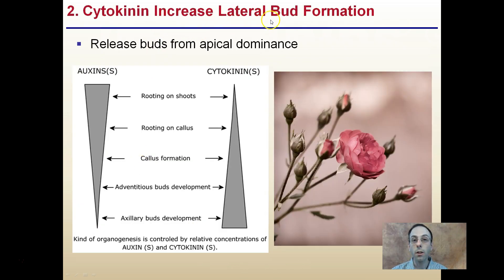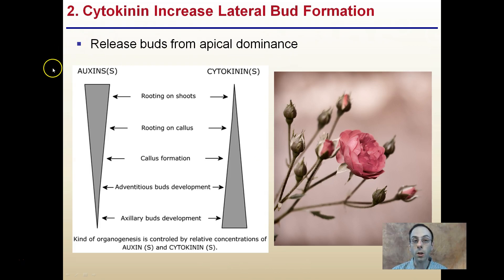Cytokinins increase lateral bud formation — we can see lateral buds branching out. Cytokinins are involved in that; they release buds from apical dominance. From the auxin video lecture, we know that auxins and cytokinins play off one another.